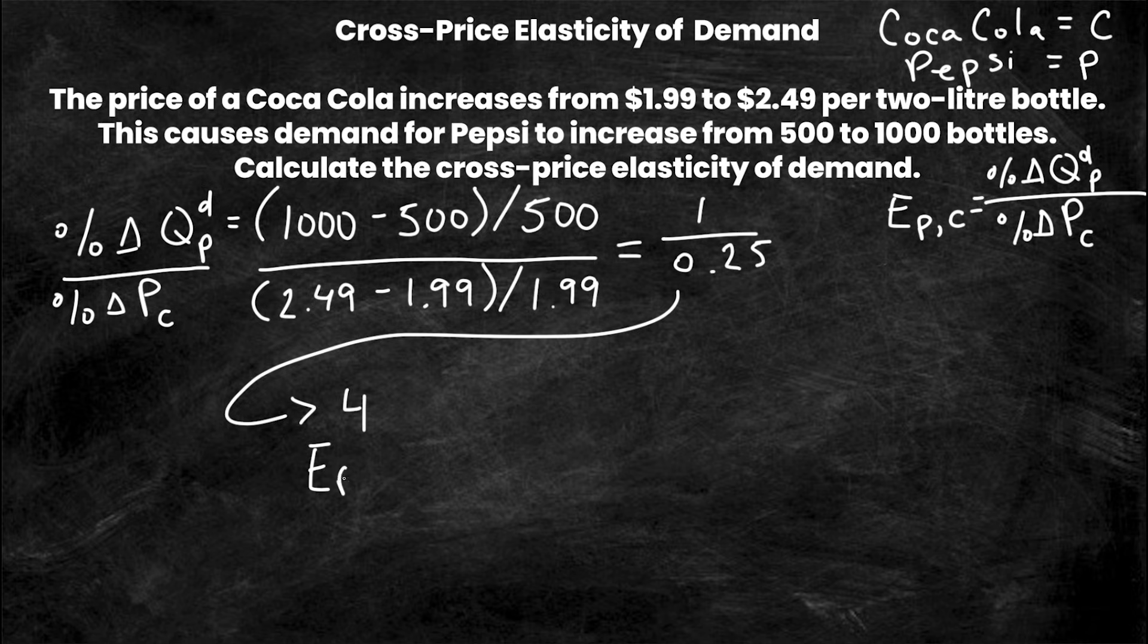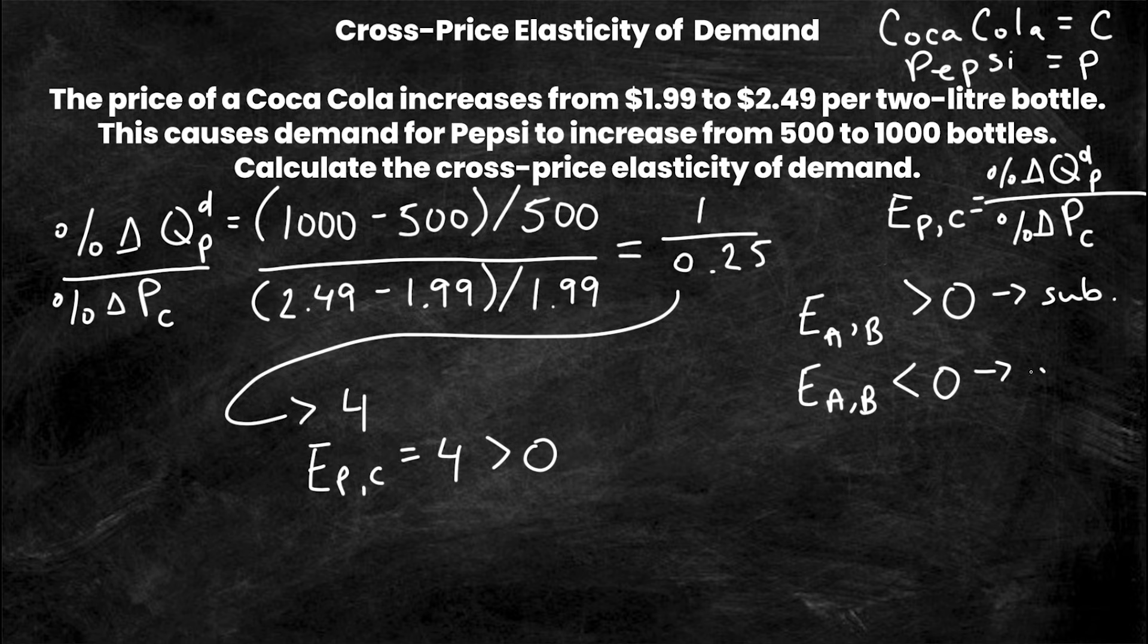And what does this tell us about the two goods? Well it's safe to say that $4 is positive, it's greater than $0, and that tells us that the two goods are substitutes. So remember that if E A,B is greater than $0, then they are substitutes. The two goods are substitutes. However, if the elasticity of A,B is less than $0, that is it's negative, then the goods are complements.